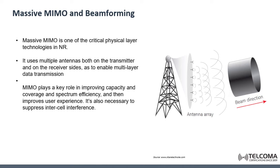At high frequency, the size of a single antenna is very small, and the area for receiving energy is also very small. To overcome this small receiving area at high frequency, we need to use a large number of transmission antennas, which is the massive MIMO concept.